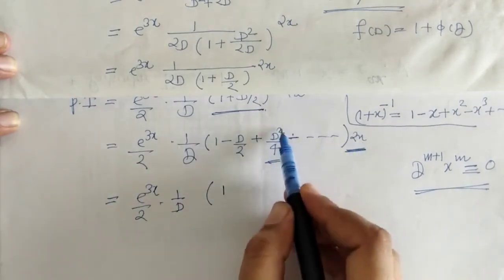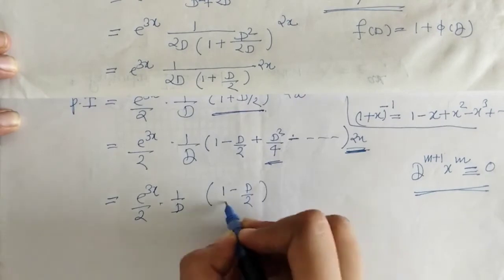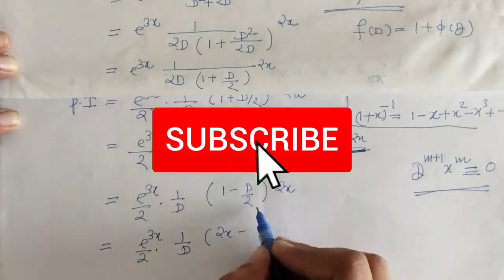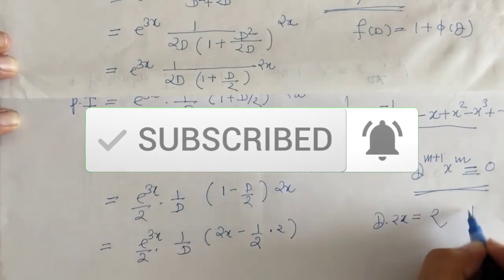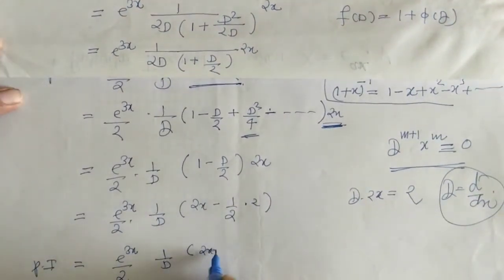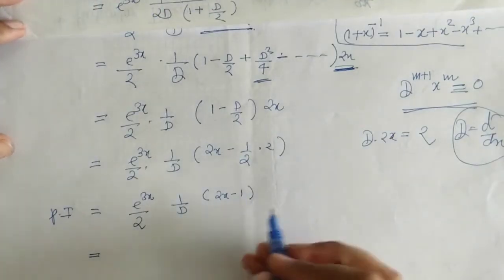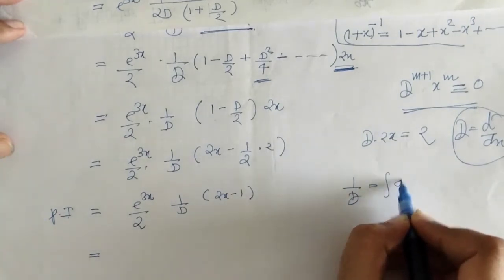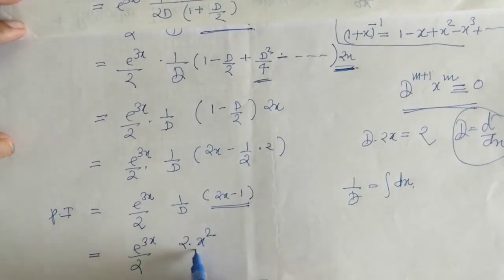When we operate D squared on 2x we will get 0, so we have only the first two terms. The derivative of 2x is 2. On simplification we got this one. Now here we have 1 upon D, and 1 upon D is integration with respect to x. So we have to operate 1 upon D on this. The integration of 2x is x squared, and the integration of 1 is x.